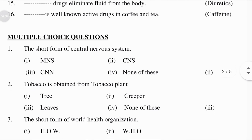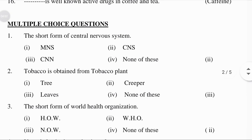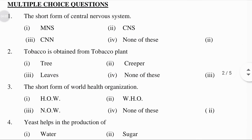Now multiple choice questions. The short form of central nervous system is: MNS, CNS, CNN, or none of these — answer: CNS.